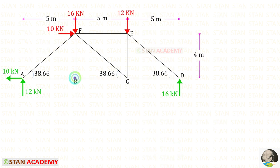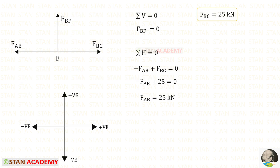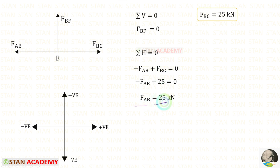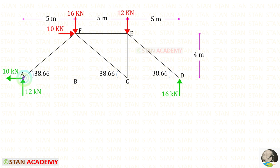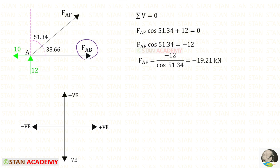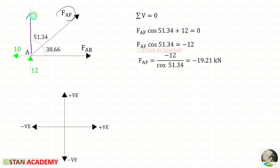Now let us take joint B. In the vertical direction there is only one member, FBF, so that will be 0. Applying the horizontal equilibrium rule: FBC is acting towards the left side so it will be negative, and FAB is acting towards the right side so it will be positive. For FAB we will get 25 kN. Now we are going to take joint A. FAB we have already found. We have to only find FAF. Using sigma V equals 0: VA is acting upwards so it will be positive. FAF is inclined — resolving vertically using cos 51.34, acting upwards so positive. For FAF we will get minus 19.21.